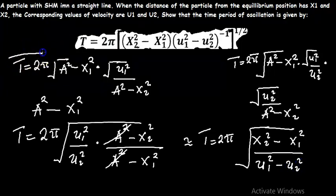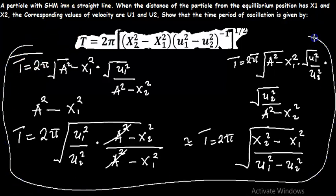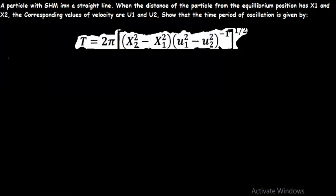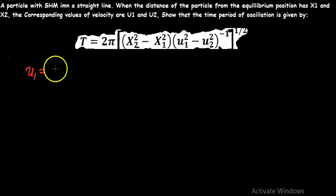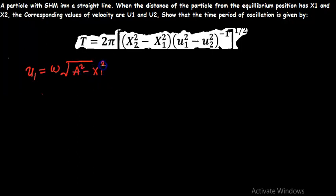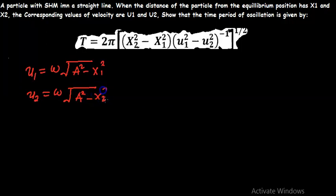So this is it for this problem. But if you like, you can solve it differently. In order to make it easy, let's say we have v1 equals omega times the square root of A squared minus x1 squared, and v2 equals omega times the square root of A squared minus x2 squared.